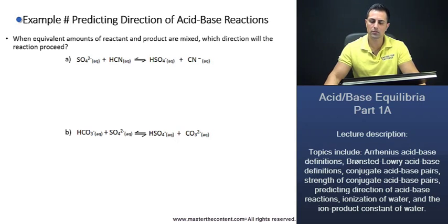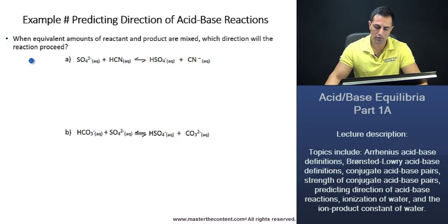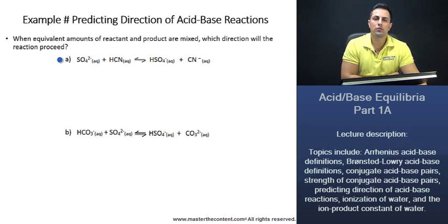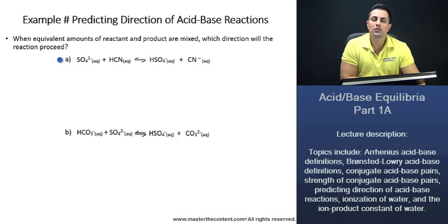The example we're going to be doing is predicting direction of acid-base reactions. When equivalent amounts of reactant and product are mixed, which direction will the reaction proceed? One thing you might want to write or take note of is: whenever you have a reaction like this, with equal amounts, and it's asking which direction will the reaction proceed,